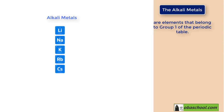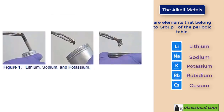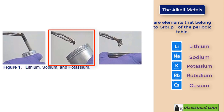The alkali metals are elements that belong to group 1 of the periodic table. Those elements are lithium, sodium, potassium, rubidium, and cesium. In this figure you can see three alkali metals: lithium, sodium, and potassium.